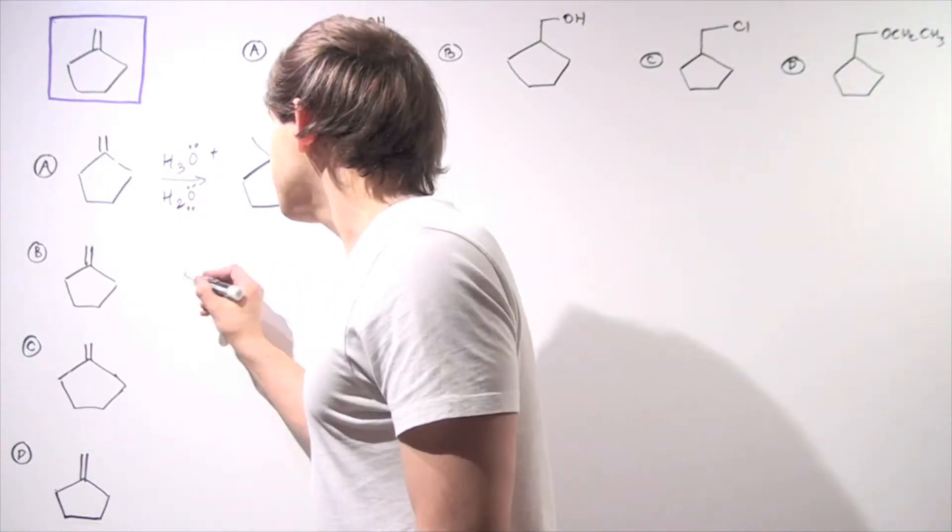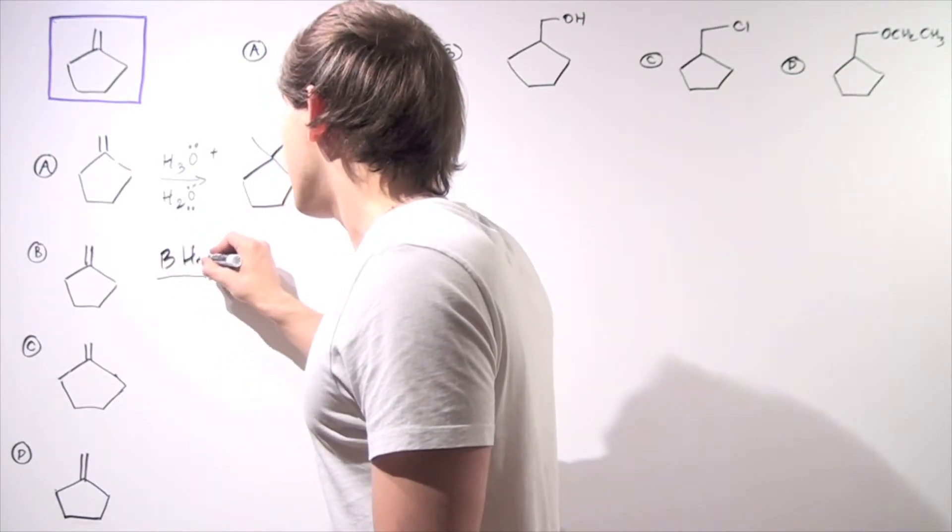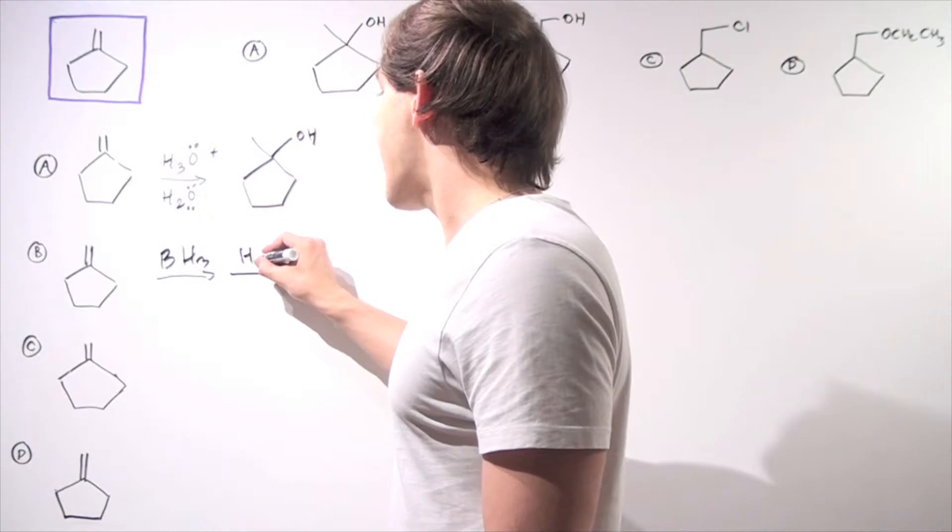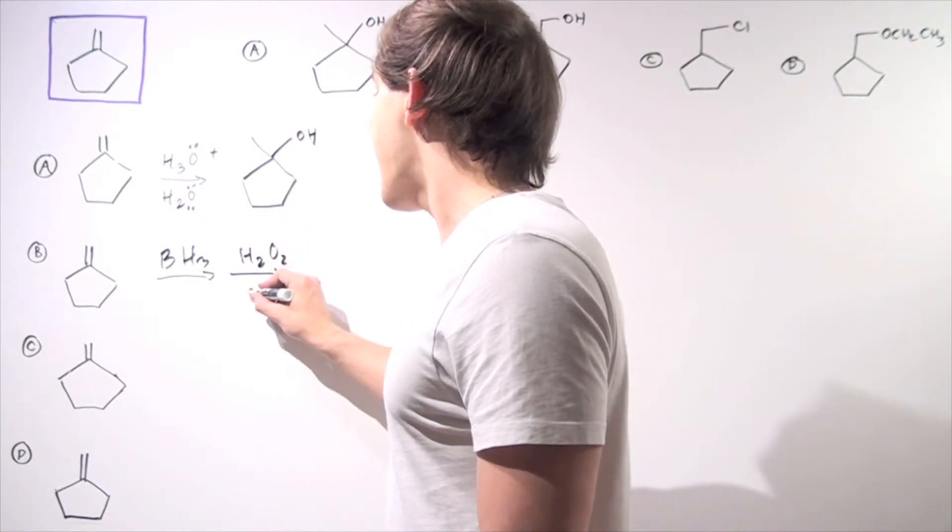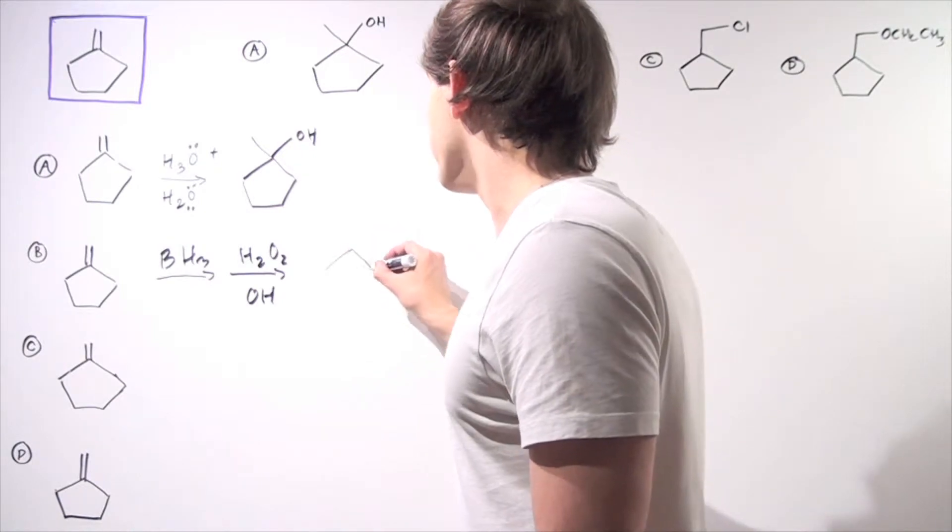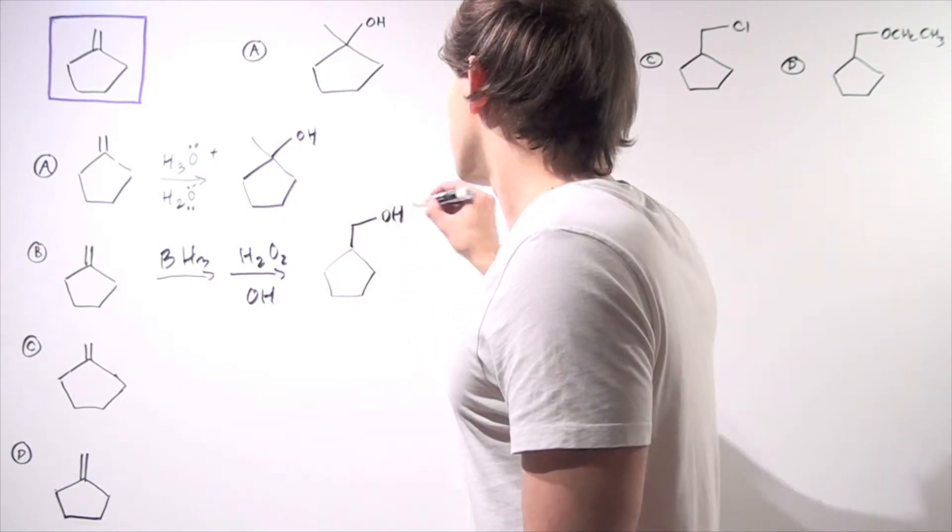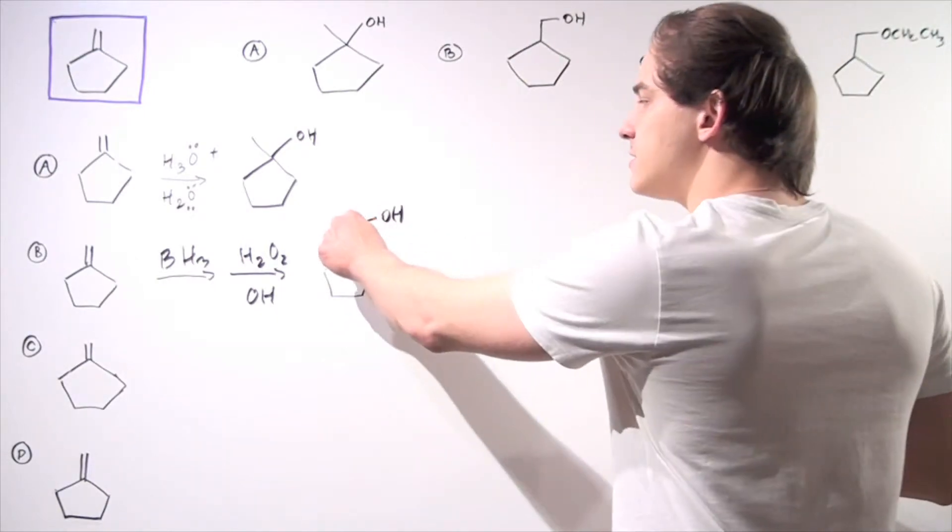In our first step, we add a BH3 molecule. In the second step, we add hydrogen peroxide and hydroxide base to produce the following molecule as needed with the hydroxide group on this top carbon.